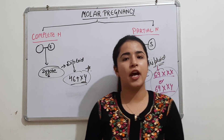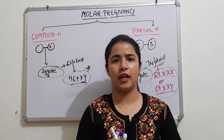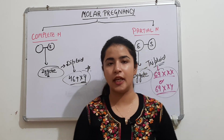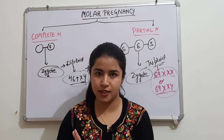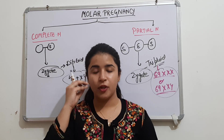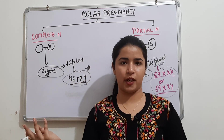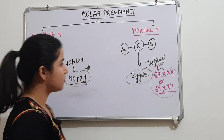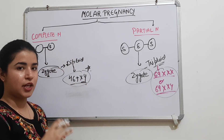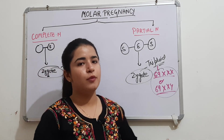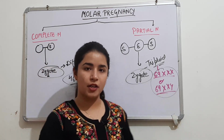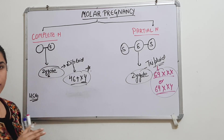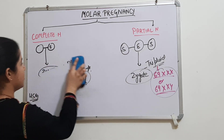When a female presents with missed periods for two, four, or six weeks, we first check the beta HCG level to confirm pregnancy. If beta HCG confirms pregnancy, we proceed to ultrasound to assess what is happening in the uterus, and the findings will differ between complete and partial mole.